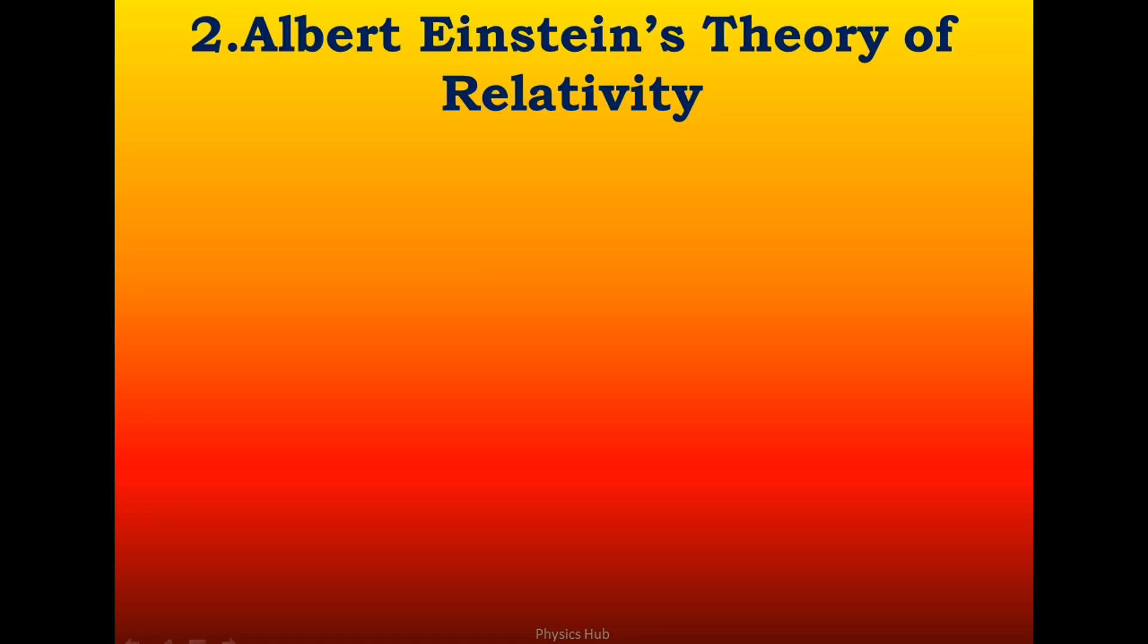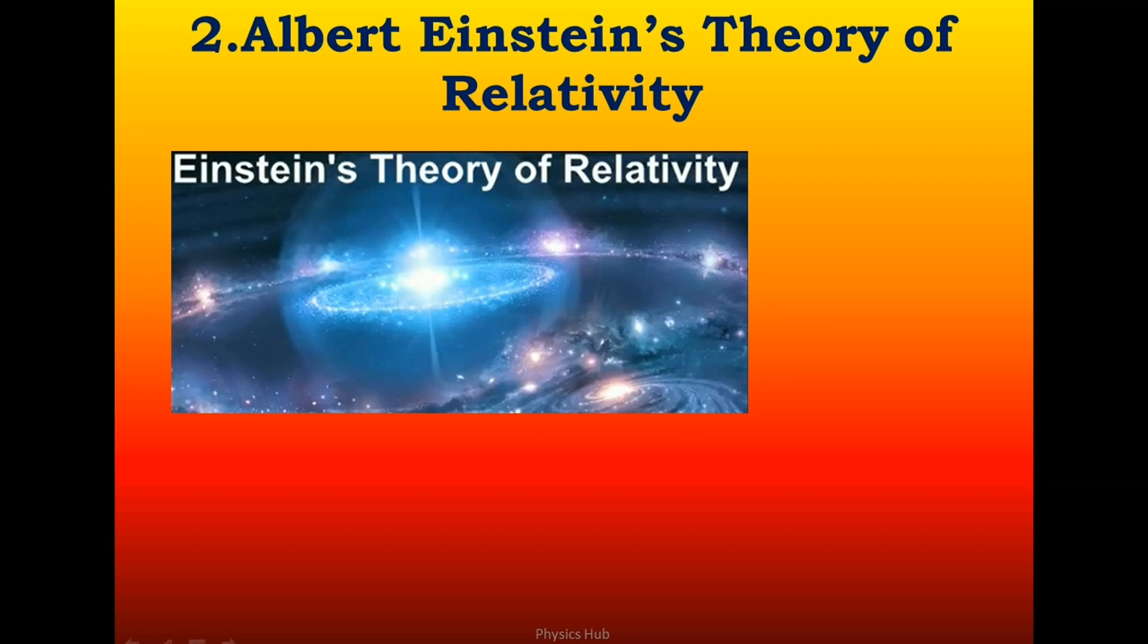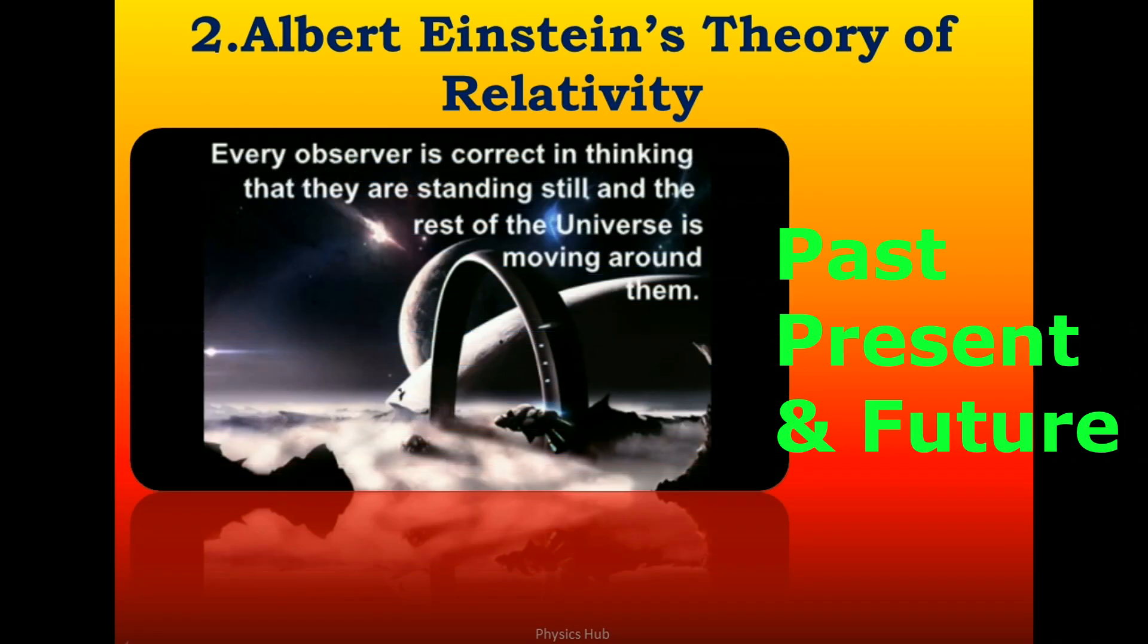At number two, it comes Albert Einstein's theory of relativity. Einstein's most famous undertaking is the generally accepted theory on the relationship between space and time. First proposed in 1905, the theory of relativity has both radically altered the course of physics and deepened our knowledge of the universe's past, present, and future.